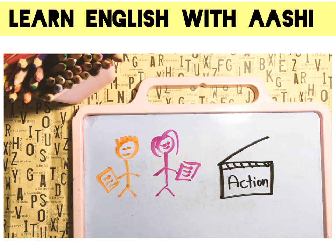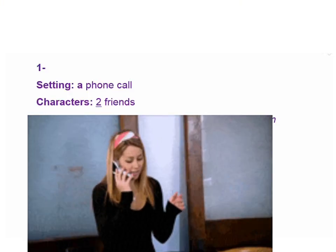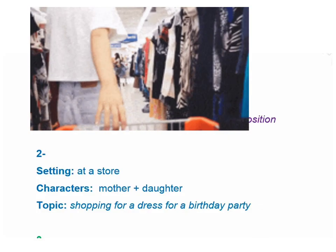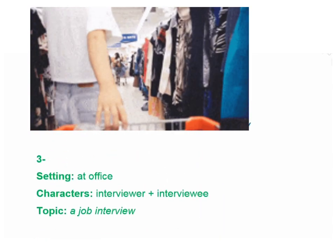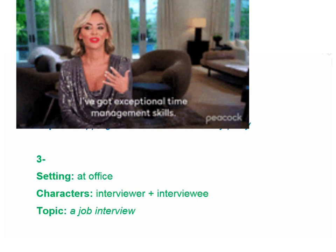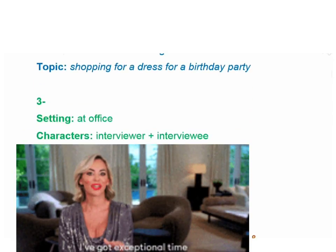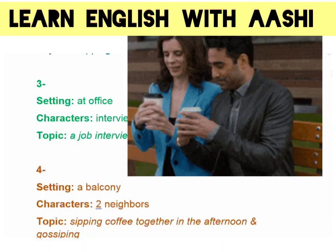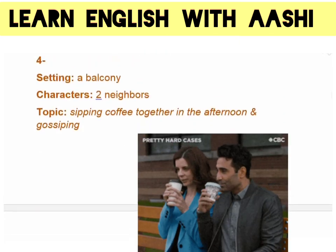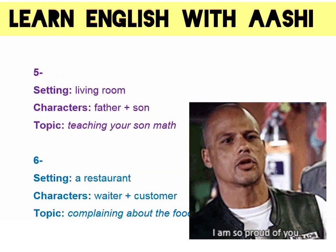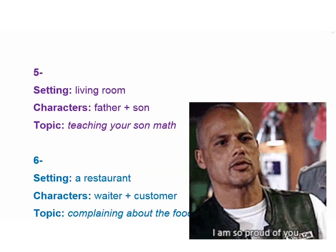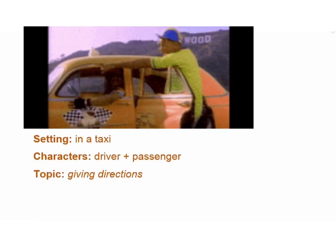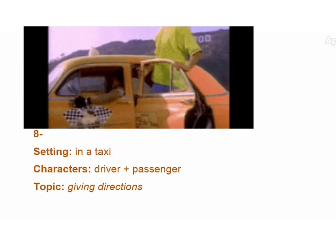The first one is a phone call between two friends, with one friend inquiring about a job position. The second one is at a store — a mother and a daughter shopping for a dress for a birthday party. The third one is more practical: an interviewer with an interviewee for a job interview. The fourth one is my favorite: two neighbors sipping coffee together in the morning and gossiping. The fifth is a parent teaching math to their child. The last one is between a driver and a passenger, with the topic being giving directions.